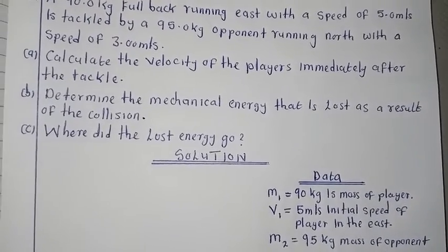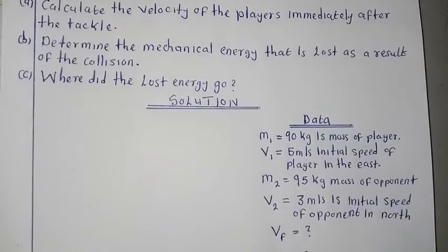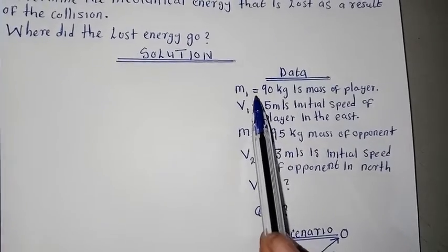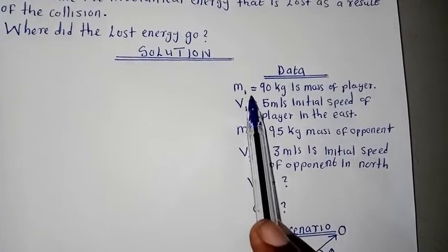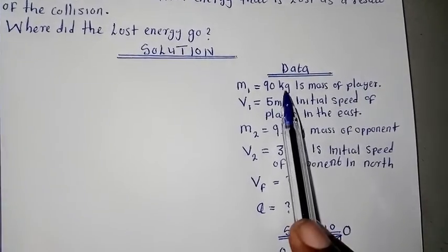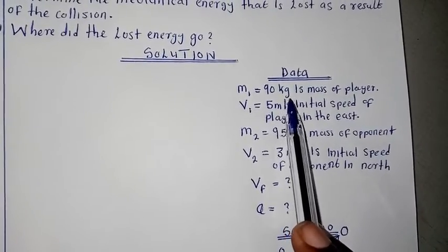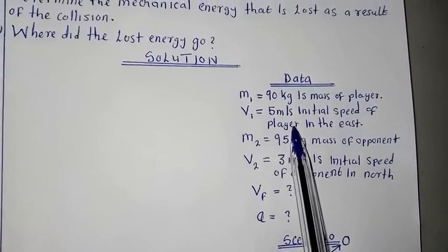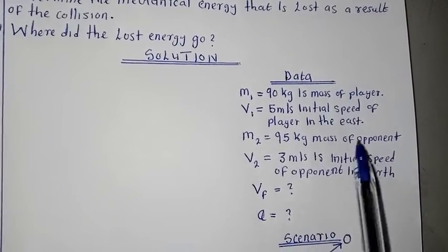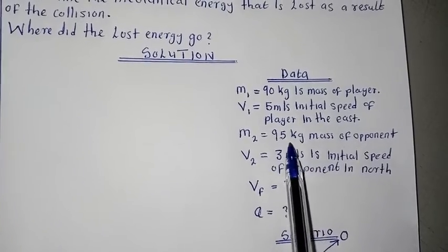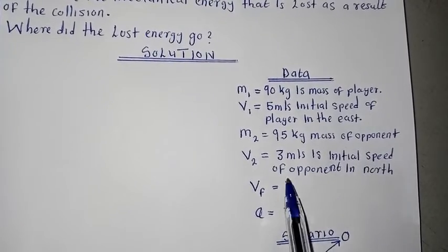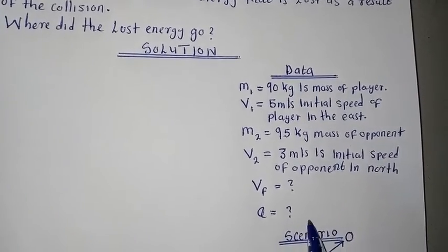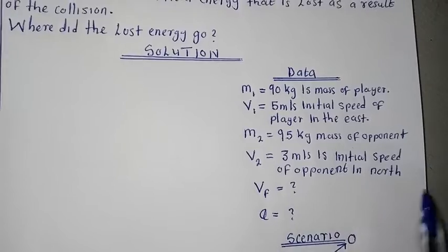They are asking us to find the velocity of the players immediately after the tackle. First of all, we collect the data. We get the mass of the player running east, which is 90 kg, with an initial velocity of 5 meters per second. Then we get the mass of the second opponent, which is 95 kg, with a velocity of 3 meters per second.